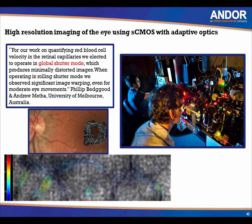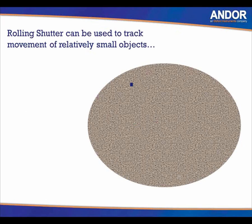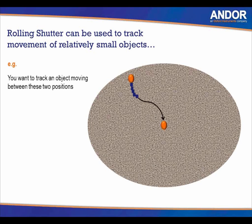However, for the majority of life science applications, rolling shutter can be used because the sample movement is very small from frame to frame. For example, looking at the movement of a vesicle inside a cell — the cell moves very small distances per frame, so the rolling shutter will have no effect. For the majority of life science applications, rolling shutter will be fine.